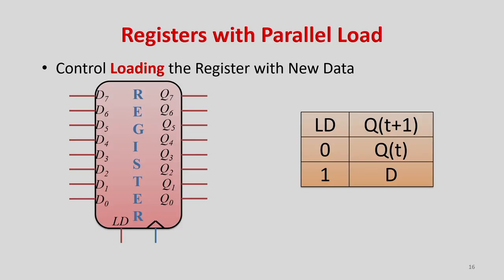Now let us discuss register with parallel load. In the earlier case we used an enable signal — whenever the register is enabled, data transfers into it. How can we design a register circuit with a control load? When LD equals 1 it loads new data; otherwise it retains the older value. Whenever load equals 1, whatever input we give will be reflected in the register. If load equals 0, it will not transfer the value but will retain the older values.